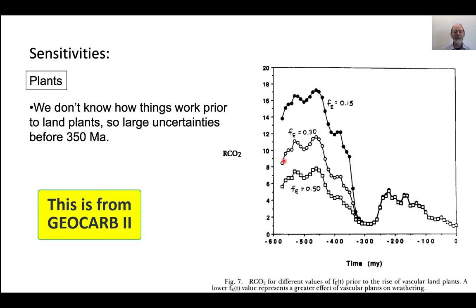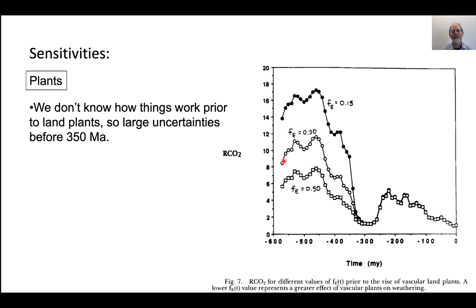Plants — we don't really know how plants are affecting this; it's not a very well-constrained parameter. But there is a big change that has to occur at 350 million years ago, which is why these different parameterizations converge around 300 million years ago. These represent different parameterizations for the period when there are no plants.